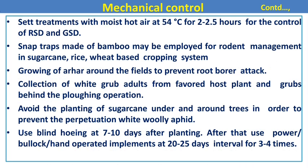Grow a border crop around the field to prevent root stalk borer attack. Collect white grub adults from the favored host plants and collect grubs behind plowing operations. Avoid planting sugarcane under and around trees to prevent pre-propagation woolly aphid infestation. Use blind hoeing as an important technique.